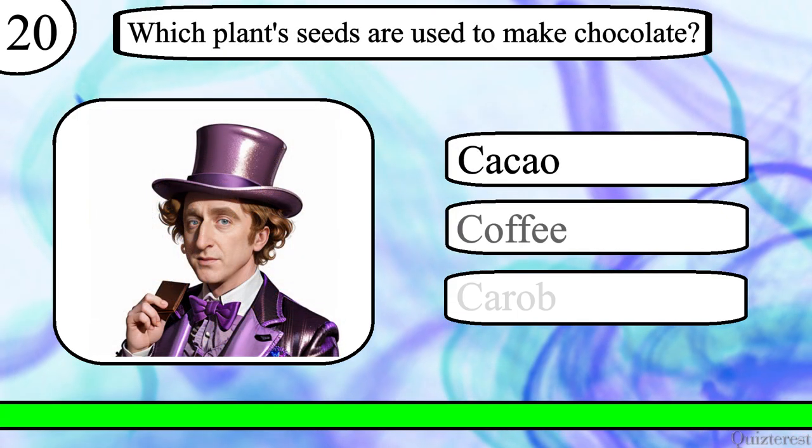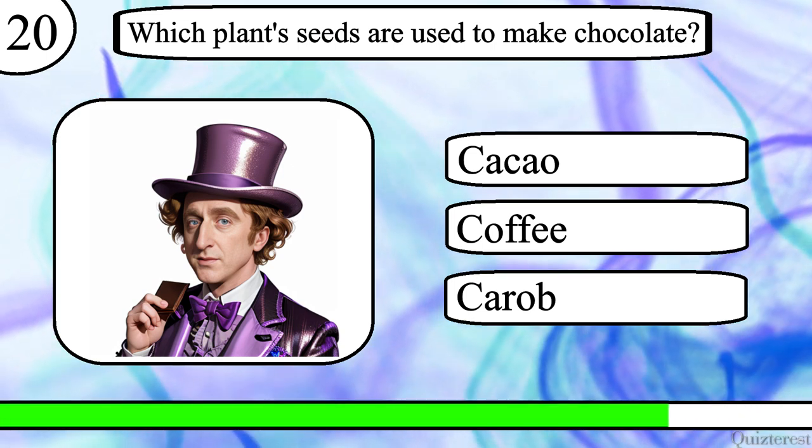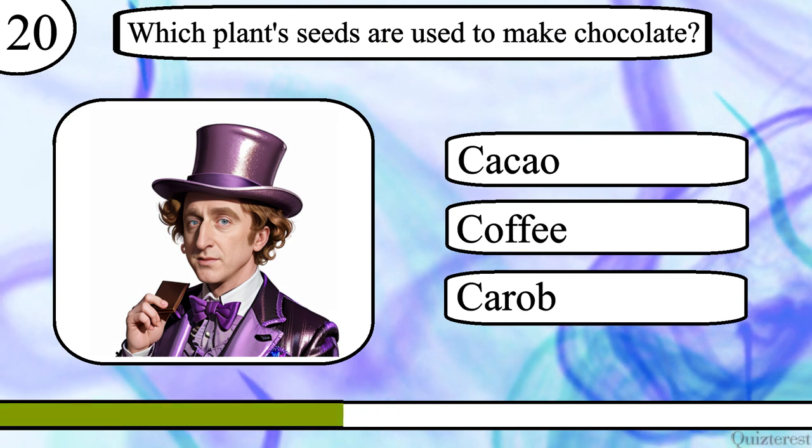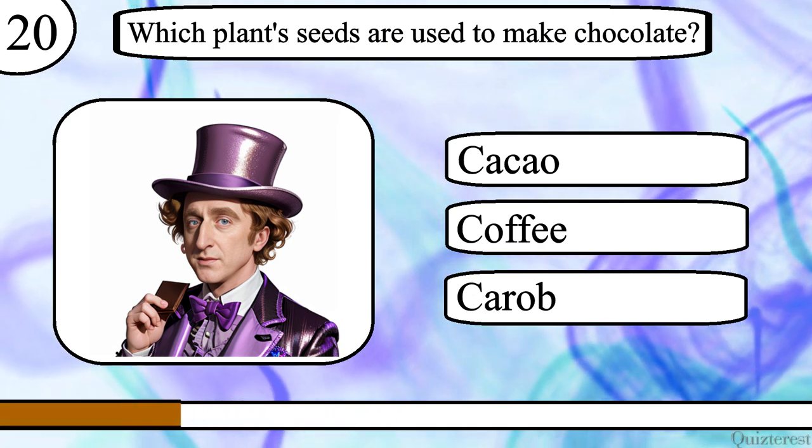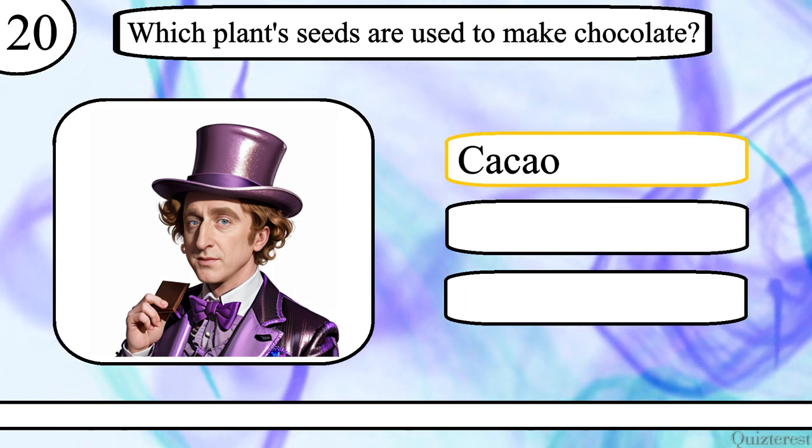Question 20. Which plant's seeds are used to make chocolate? Cacao, coffee or carob? The correct answer is cacao.